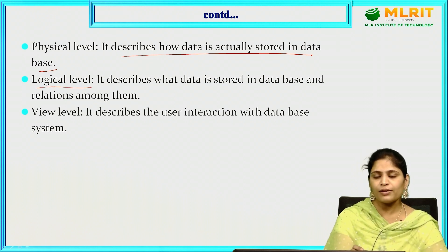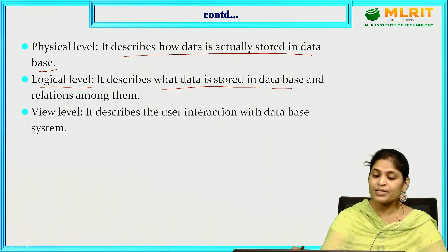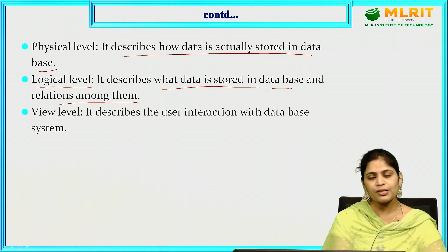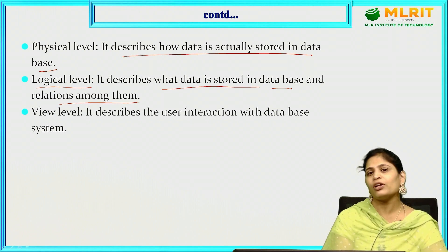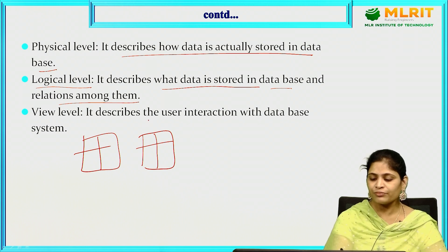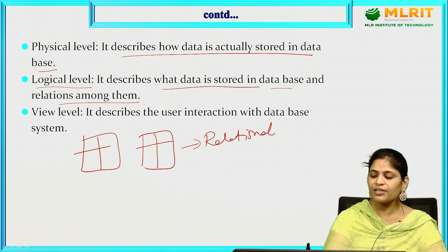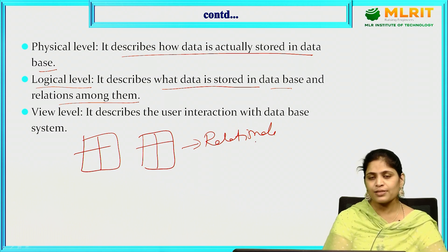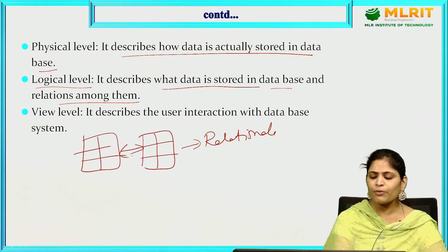What is the logical level meant for? Logical level describes what data is stored in the database and the relations among data. The data is stored in table format — that is, relational data. Relational data is data in the form of tables, that is, in the form of rows and columns. The relationships among this data are maintained by the logical level.